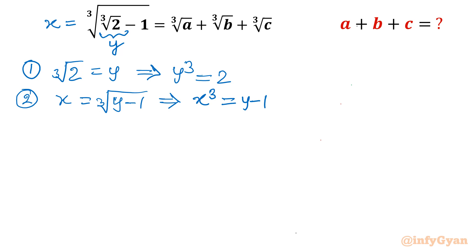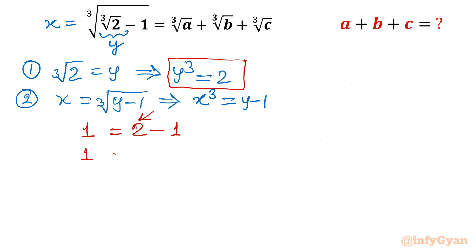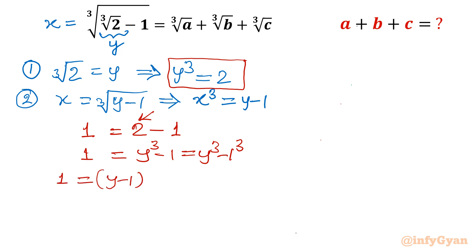Now a trick — or manipulation. I am going to write 1 equals 2 minus 1. Since y cubed equals 2, I can write y cubed minus 1. This is obviously a³ minus b³, specifically y cubed minus 1 cubed. So we apply the identity a³ minus b³ equals (a minus b)(a² plus b² plus ab).